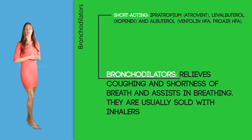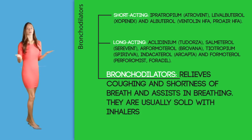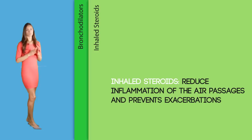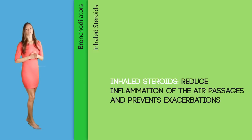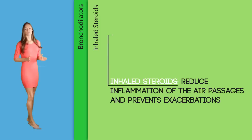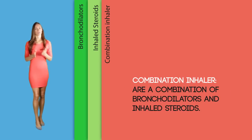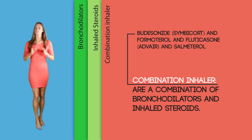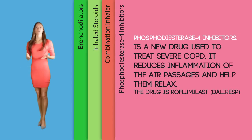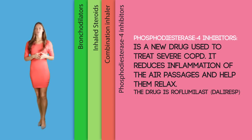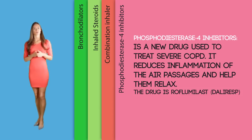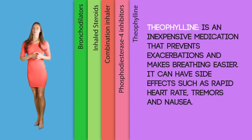Examples of short-acting bronchodilators include Atrovent, levalbuterol, Xopenex, and Ventolin HFA/ProAir. Long-acting bronchodilators include Tudorza, Serevent, Brovana, Spiriva, Arcapta, and Perforomist. Inhaled steroids can also reduce inflammation of the air passages and prevent exacerbations — examples include Pulmicort and Flovent. Combination inhalers combine bronchodilators and inhaled steroids; examples include Symbicort, Advair, and Salmeterol. Phosphodiesterase-4 inhibitors are a newer drug used to treat severe COPD — they reduce inflammation of the air passages and help them relax. One example is Daliresp.